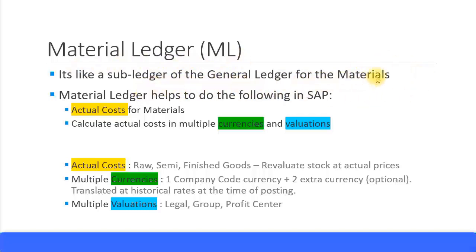What does the material ledger do? It calculates the actual costs for materials. It also calculates actual costs in multiple currencies — up to a maximum of three currencies — and supports multiple valuations. We can also call these parallel currencies or parallel valuations.